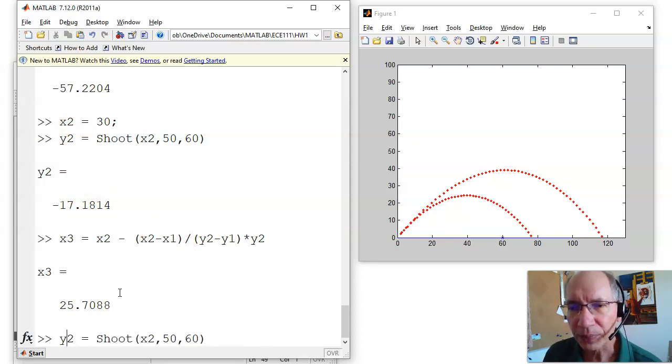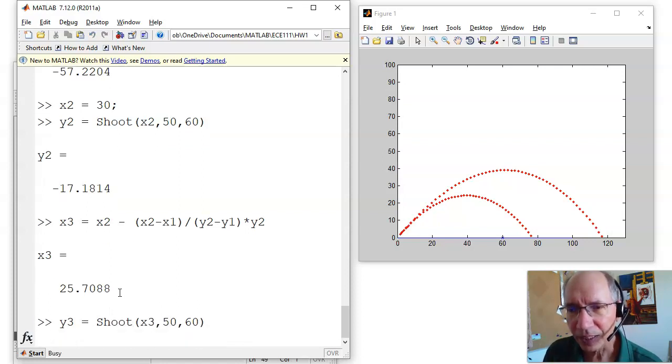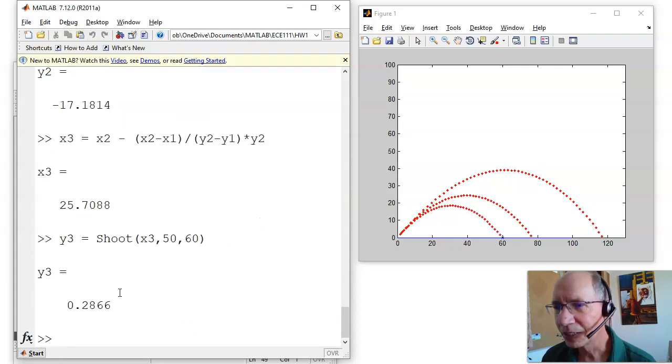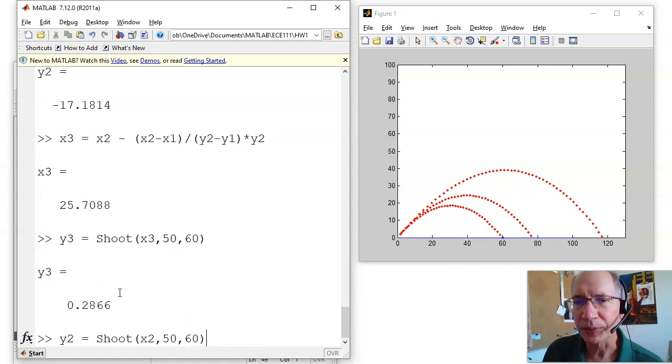So let's try it. There's y3, x3, launch the tennis ball. It's coming down. Ooh, pretty close. I missed by 2866. If that's not good enough, repeat. My next guess will be a function of the previous two guesses.